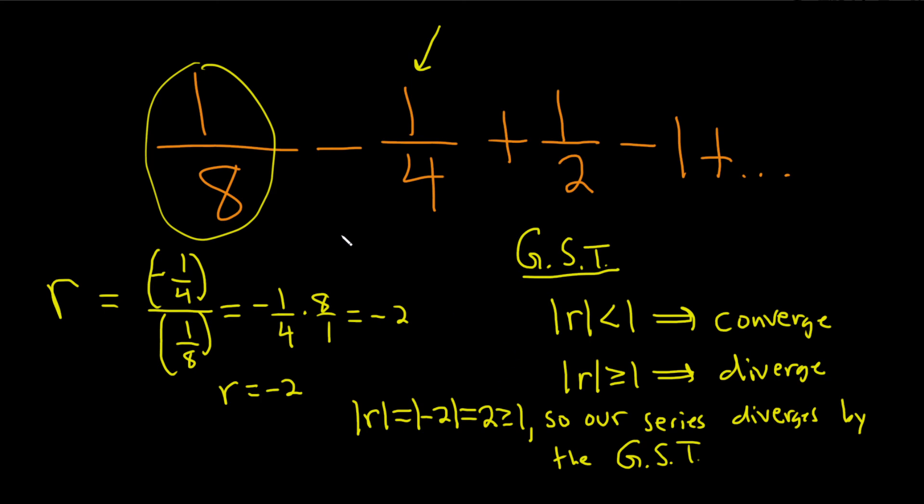So again, when you see something like this, you always want to see if it's geometric. Is there a number I can use that I can keep multiplying each term by to get the next one? You can usually tell, but if you can't, you can pick any term and divide by the one before it. We could have picked one half and divided by negative one fourth, and we would have also gotten negative two.